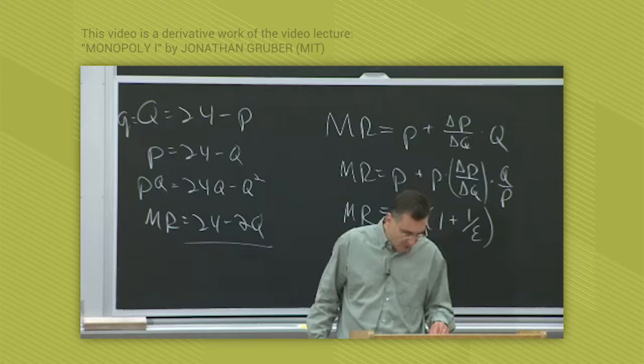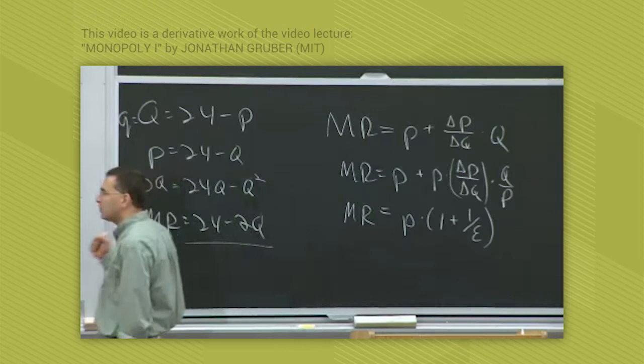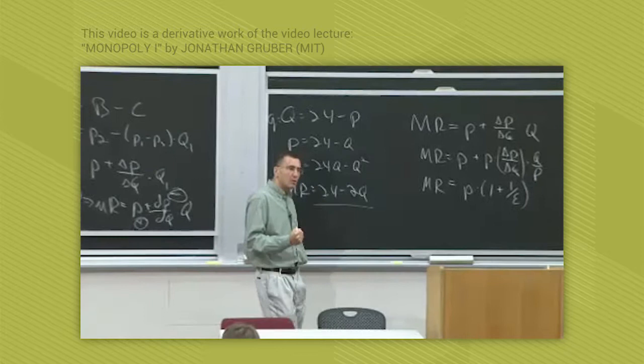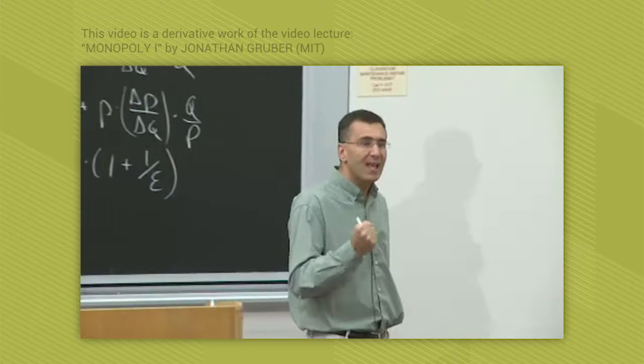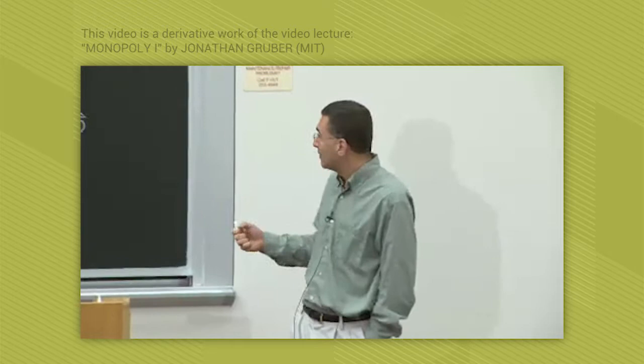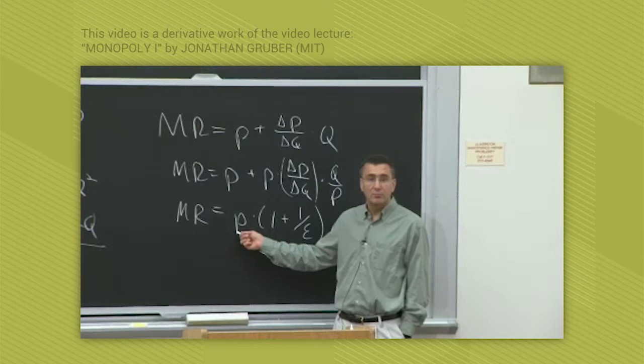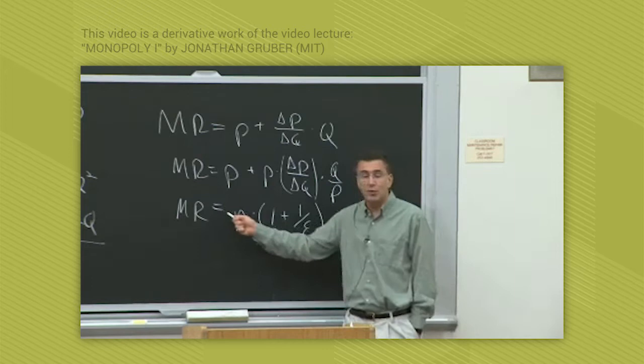Marginal revenue equals P times 1 plus 1 over the elasticity of demand. Think about what this means. What is the marginal revenue for a perfectly competitive firm? The elasticity of demand facing a perfectly competitive firm is negative infinity — perfectly elastic. So by L'Hôpital's rule, marginal revenue equals P. For a perfectly competitive firm where elasticity is negative infinity, marginal revenue equals P.